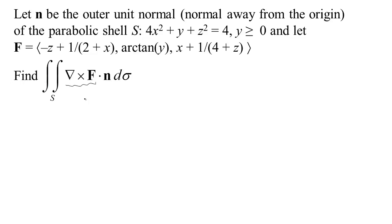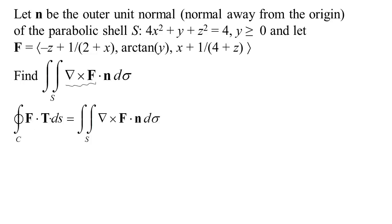Green's theorem, or Stokes' theorem, we normally would use it this way: we want to find a circulation integral and we turn it into a surface integral. But sometimes we use it the other way. If we have an integral that's the flux of the curl, we could turn it back into a circulation integral. It may be that the circulation integral is actually easier to do than the original integral.